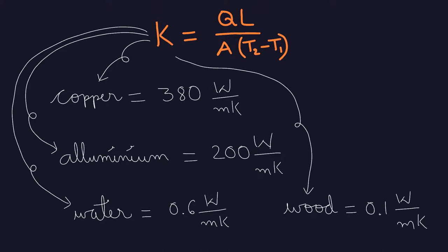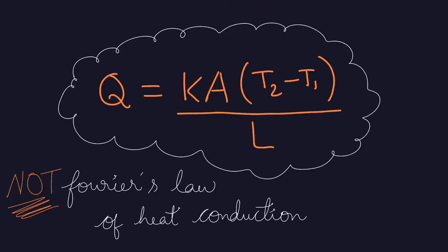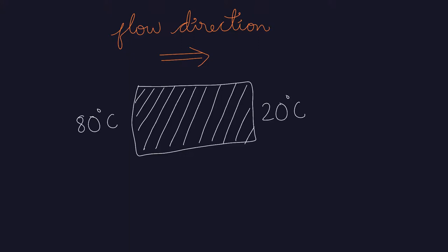There is one last modification to Fourier's law of heat conduction. Heat naturally flows from high temperature to low temperature. It does not flow in the opposite direction unless we force it to happen. It flows until both the bodies reach the same temperature and then stops.